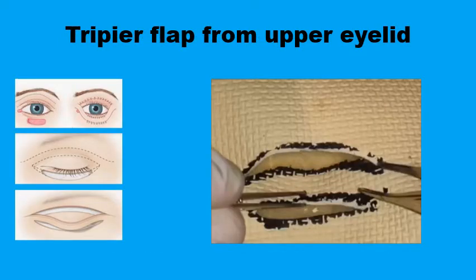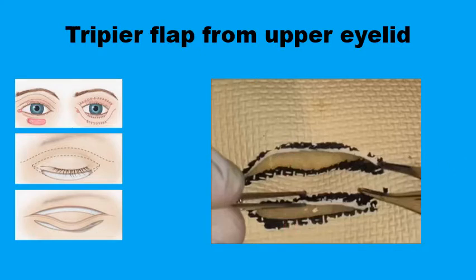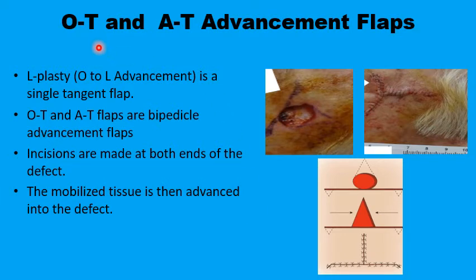One other variant of the bipedicle flap is the Tripier flap from the upper eyelid. If you have a defect in the lower eyelid that cannot be closed primarily or by recruiting local tissues, you can bring an intact bridge of skin from the upper eyelid, where there is more redundant skin. This bridge of skin is bipedicle, supplied from both sides by vessels around the medial and lateral canthi of the eye, and is transposed to the lower eyelid and sutured in place. The incision lines are parallel to the relaxed skin tension lines.